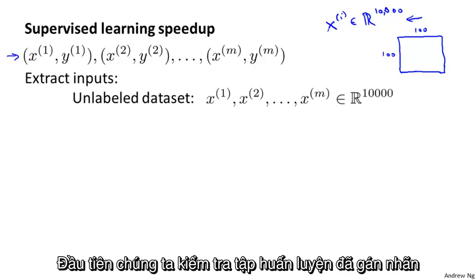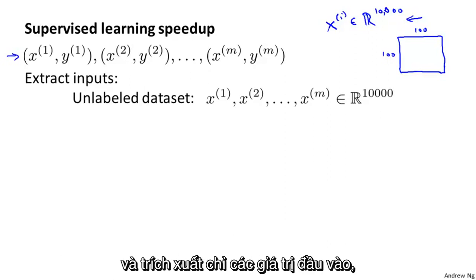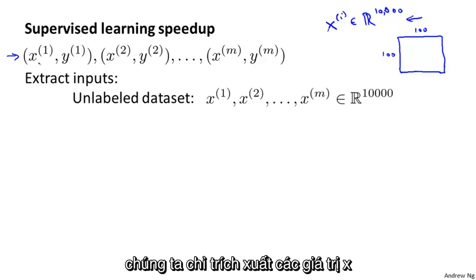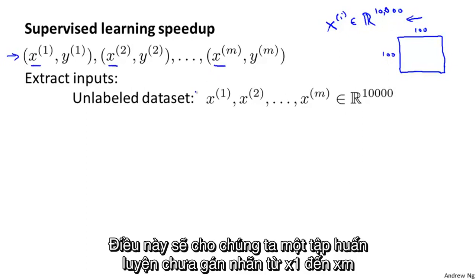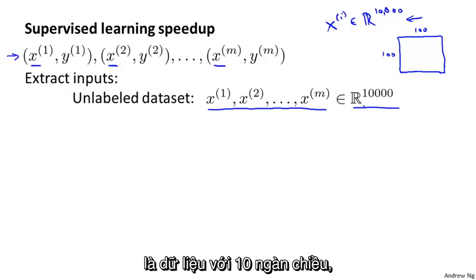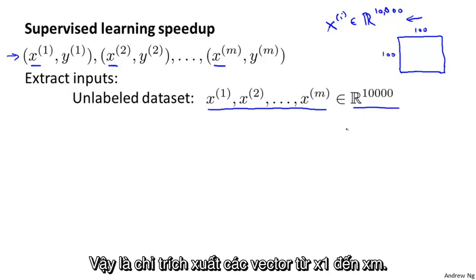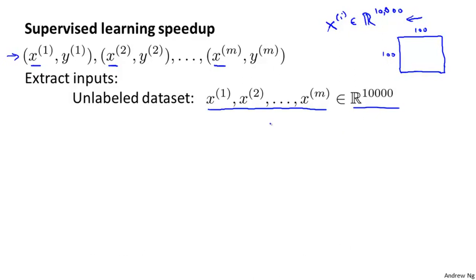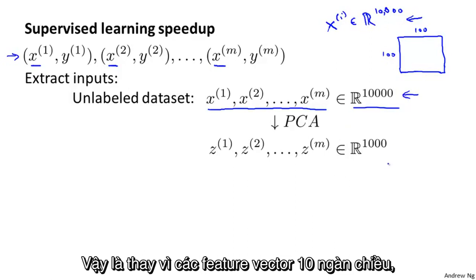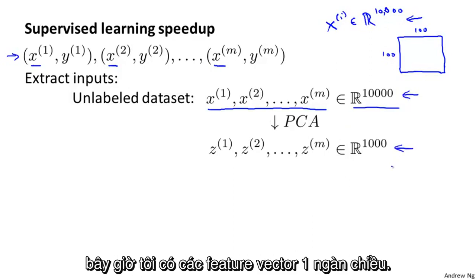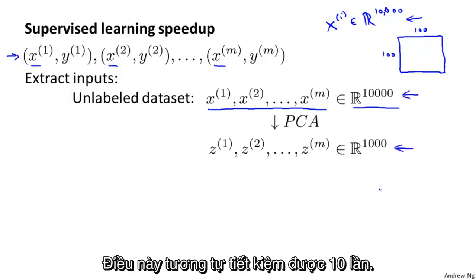Here's how you do that. We're going to first take our labeled training set and extract just the inputs — just the x's — and temporarily put aside the y's. This gives us an unlabeled training set x1 through xm, which are maybe 10,000 dimensional examples. Then we apply PCA, which gives a reduced dimension representation of the data. So instead of 10,000 dimensional feature vectors, we now have maybe 1,000 dimensional feature vectors — about a 10x savings.